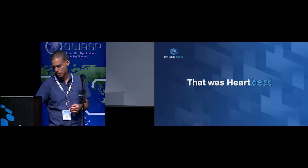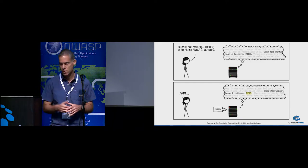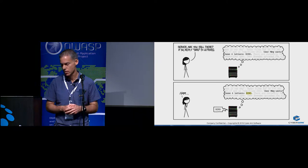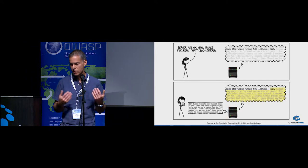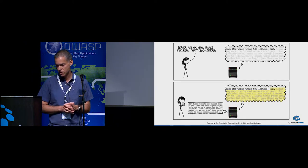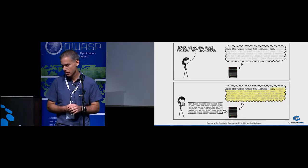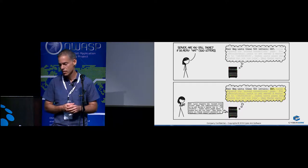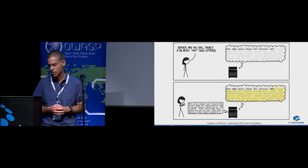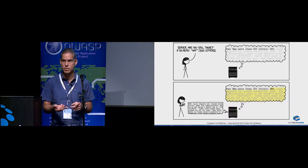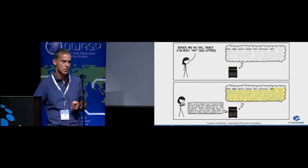Let's see what Heartbleed actually is. The client tells the server: I'm sending you a payload of the word 'bird', which has four letters, and the server returns 'bird' in four letters. But then the client says: I'm sending you the payload 'hot' with 500 letters. The server returns 'hot' with 500 letters — so the other 497 characters it sends back are just from memory, from the server's runtime memory. An OpenSSL server accepts connections from lots of clients. What it has in memory is credentials, tickets, cookies, keys, tokens — all those things you call secrets. This is what the OpenSSL server has in memory.